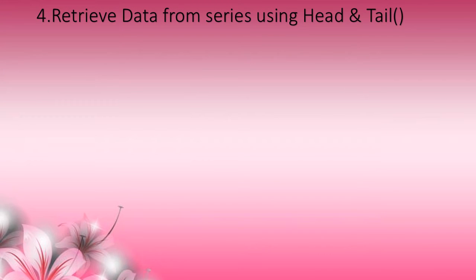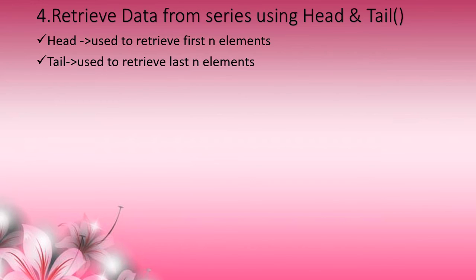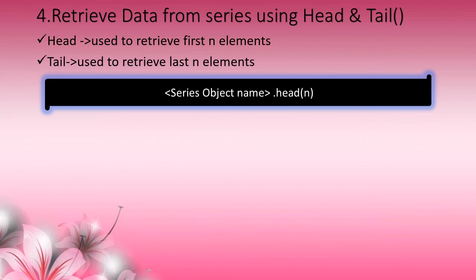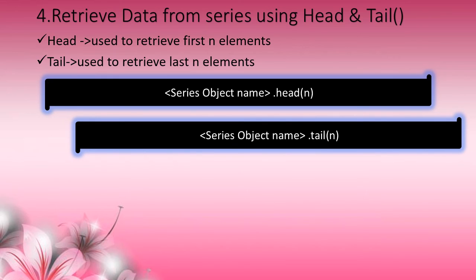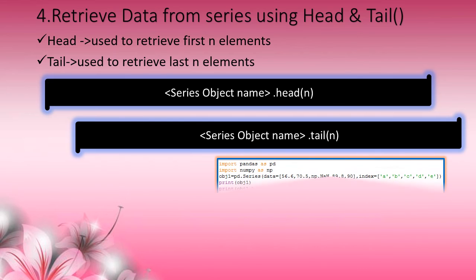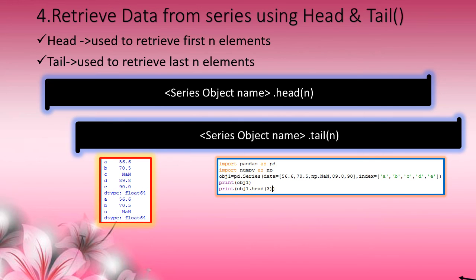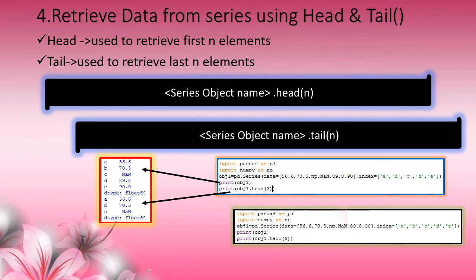To retrieve a set of data using head and tail functions: head retrieves the first n elements and tail retrieves the last n elements. General format for head is series_object.head(n), where n is the number of elements to retrieve. Likewise, tail is series_object.tail(n). For head(3), the first 3 elements are retrieved. For tail(3), the last 3 elements are retrieved.